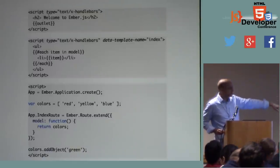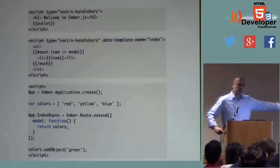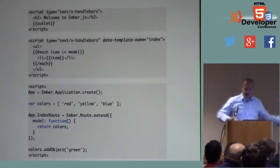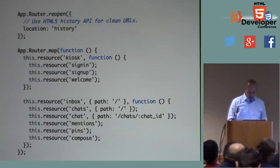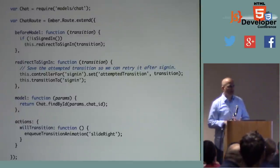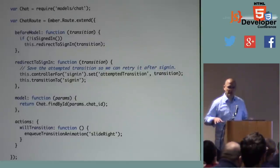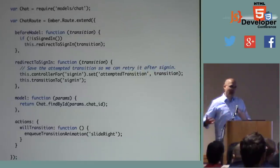Going back to the earlier template example, we now understand a little more what the route is doing and what the model hook is doing. The model hook is responsible for designating some data that is going to be rendered by your template. Are there any questions about this piece? I really want to make sure we nail this — it's the important piece of Ember that a lot of apps just don't get right.